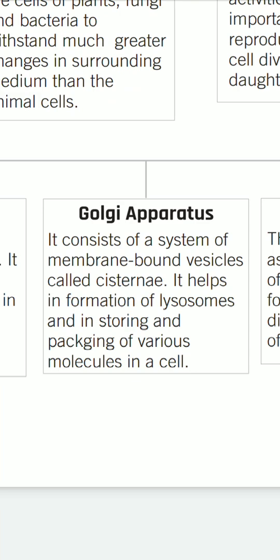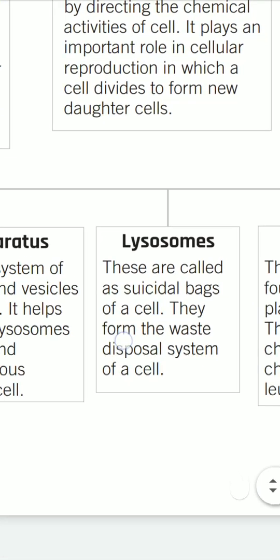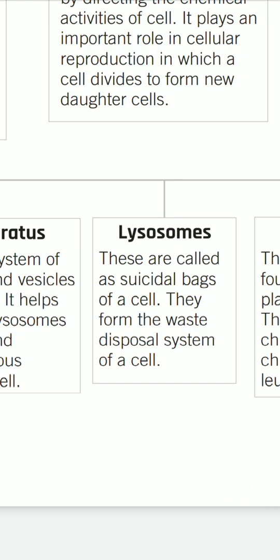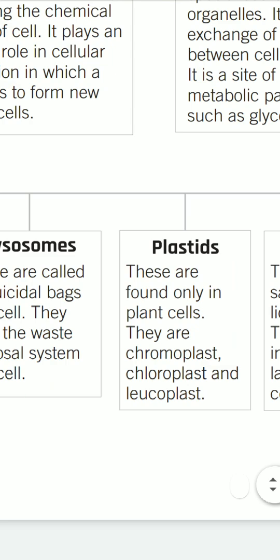The Golgi apparatus consists of a system of membrane-bound vesicles called cisternae. It helps in the formation of lysosomes and in storing and packaging of various molecules in a cell. Lysosomes are called the suicidal packs of a cell; they form the waste disposal system of the cell. Just as we have a dustbin at home for waste disposal, our cells have lysosomes to remove waste.